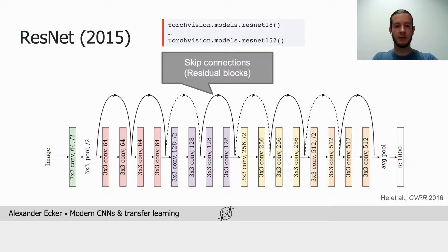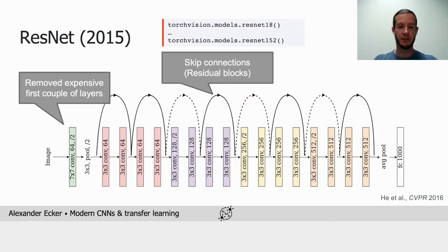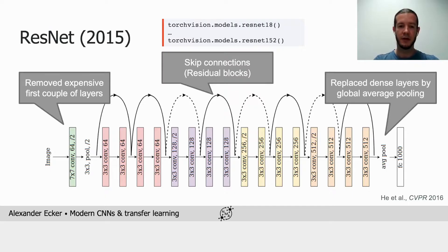In addition to the skip connections, ResNets made two important improvements over earlier architectures like VGG. First, they replaced the expensive first couple of layers by something more efficient. And second, they replaced the multiple fully connected layers at the end of the network by first performing a global average pooling and then adding only one fully connected layer that then requires much fewer connections.